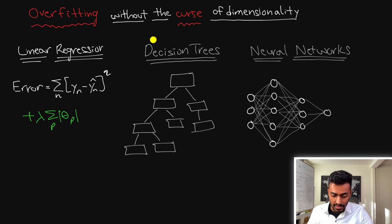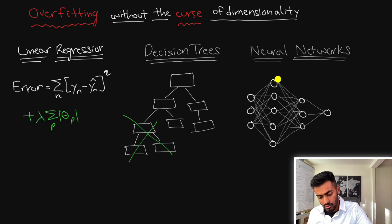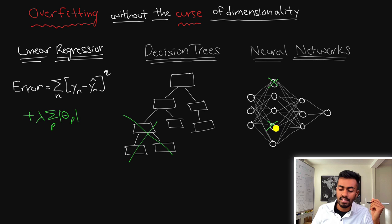With decision trees, a way to mitigate overfitting is pruning decision trees because they might get too deep. For neural networks, one way to mitigate overfitting is to do dropout, where we randomly turn off selected neurons in order to help the neural network generalize better along different paths.